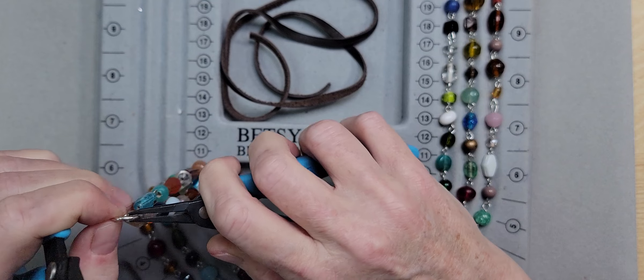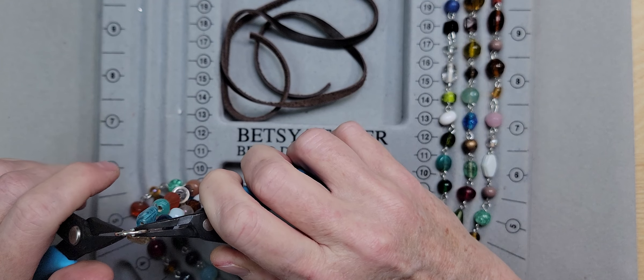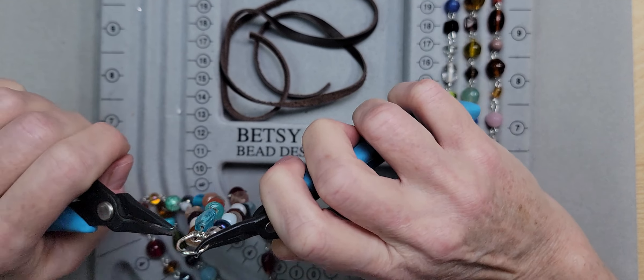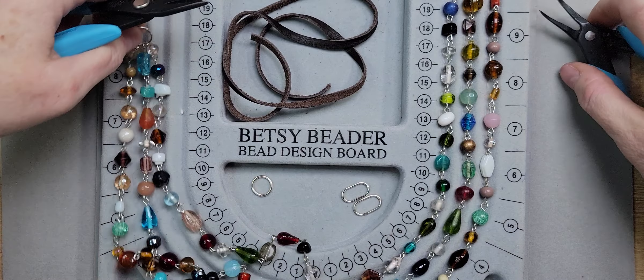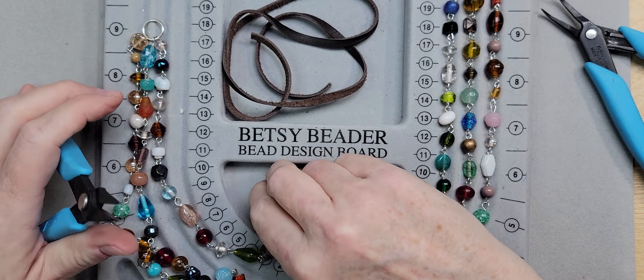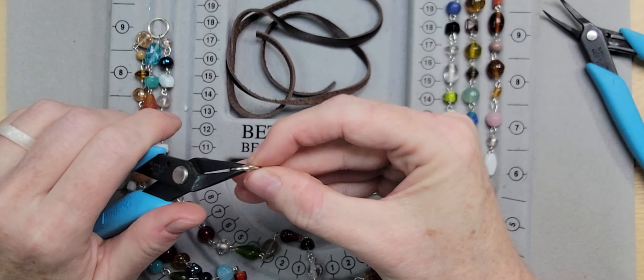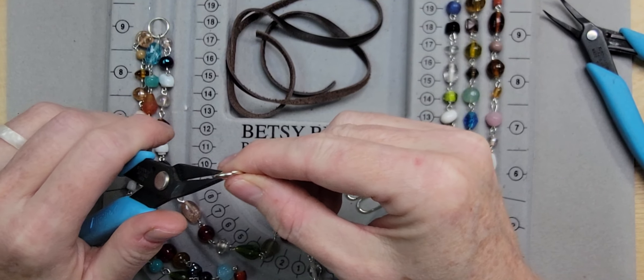And as you can see, you want to open and close the jump rings side to side, never pulling apart - that weakens the jump ring. Okay, that side is done. We're going to grab the second 10 millimeter round jump ring.